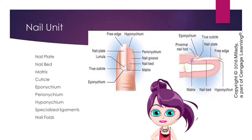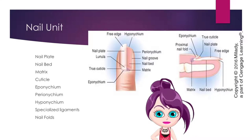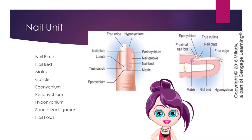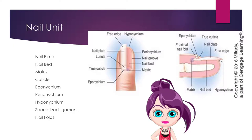The nine parts are: the nail plate, the nail bed, the matrix, the cuticle, the eponychium, the paronychium, the hyponychium, specialized ligaments, and nail folds.